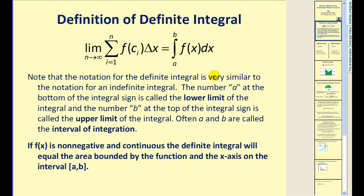The notation for the definite integral is very similar to the notation for an indefinite integral. The number A at the bottom of the integral sign is called the lower limit of integration, and the B at the top is called the upper limit of integration. Often A and B are called the interval of integration. If F of X is non-negative and continuous, the definite integral will equal the area bounded by the function and the X axis on the interval from A to B.